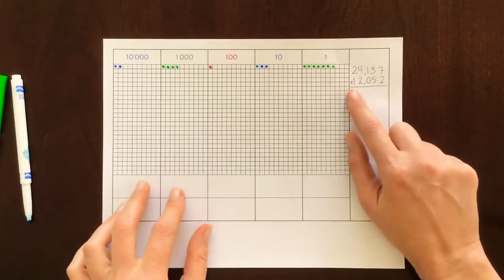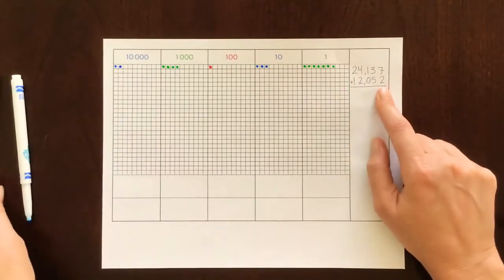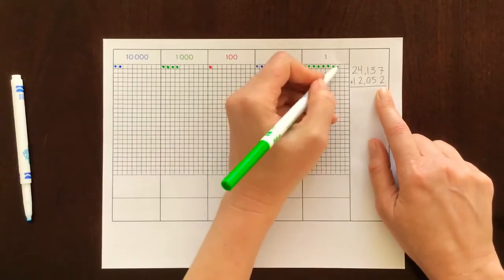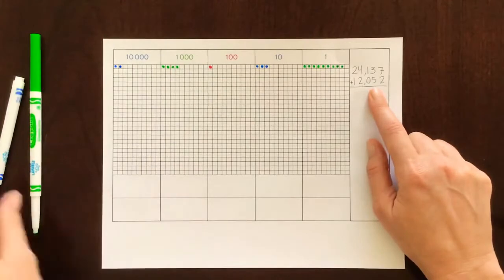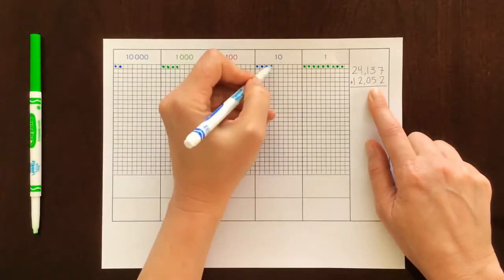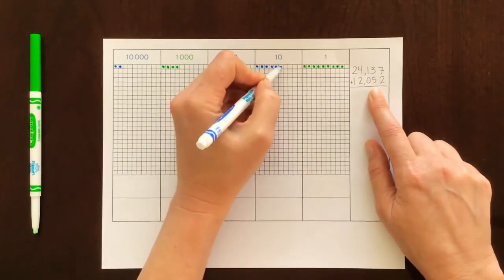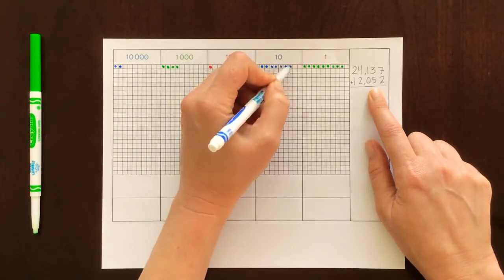Okay now let's look at our second number. We have two so we're going to add two more dots. One, two. In the tens place we have five so we'll add five. One, two, three, four, five.